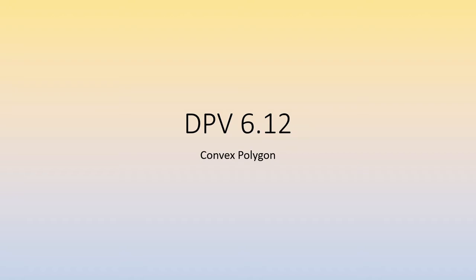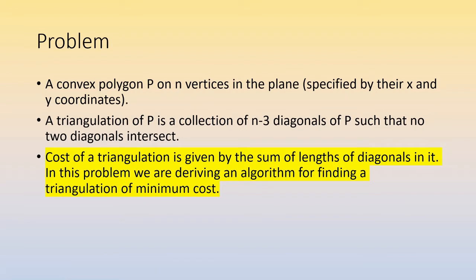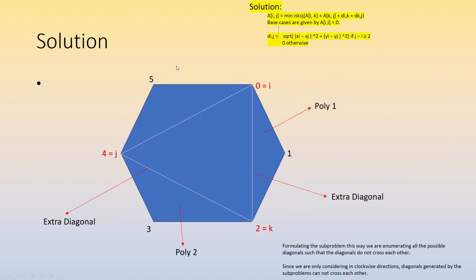Welcome to another session on dynamic programming — DPV 6.12. Today the topic is convex polygon triangulation. Some graphics designers may come across this problem of triangulating a design of polygons. In this problem we are given a polygon of vertices in a plane with XY coordinates. A triangulation is finding a collection of n minus three diagonals such that no two diagonals intersect, and we want to find the minimum cost — the minimum sum of lengths of non-crossing diagonals.